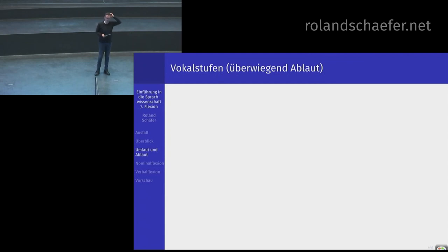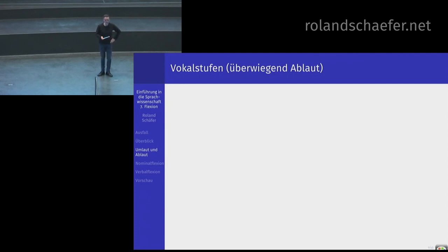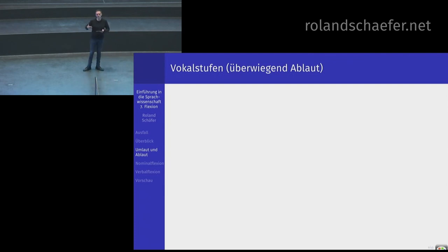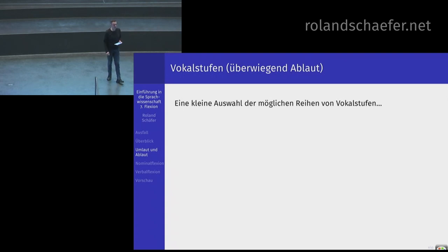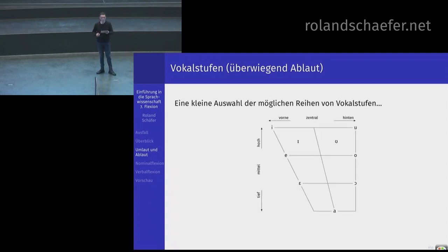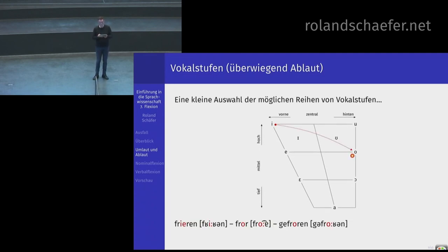Wenn wir uns die Vokalstufen oder den sogenannten Ablaut bei den starken Verben angucken – die müssen Sie, wenn Sie Deutsch lernen, irgendwie wie im Lateinischen als Tabellen mit Stammformen lernen. Das deutet schon auf was hin: nicht alle Vokalstufen sind historisch gesehen Ablaut. Ablaut ist ein historisch, in der Diachronen Linguistik definierter Begriff. Frieren – fror – gefroren. Von frieren gehen Sie zum O zurück. Vielleicht geht die Zunge bei diesen Vokalreihen immer nach hinten?